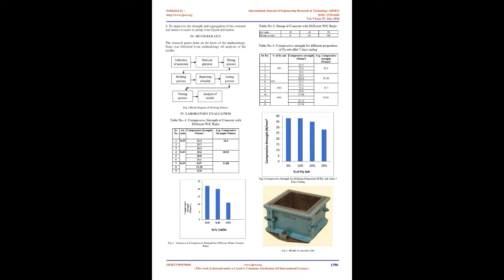Pulverized fuel ash is available in large quantities in the country as a waste product from a number of thermal power stations and industrial plants using pulverized, crushed, or ground coal or lignite as fuel for boilers. The effective use of pulverized fuel ash as a pozzolana in the manufacture of and for part replacement of cement, as an admixture in cement mortar and concrete, lime pozzolana mixture, and products such as fly ash lime bricks, concrete blocks, asbestos cement products, etc., have been established in the country.